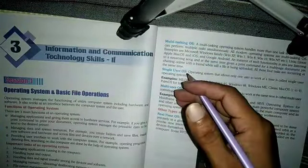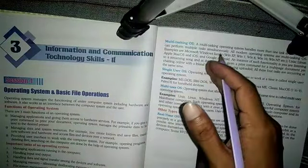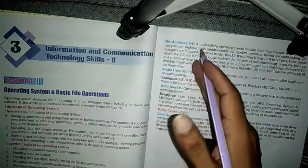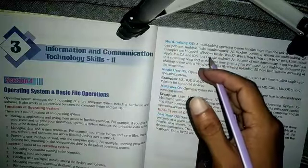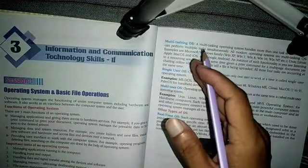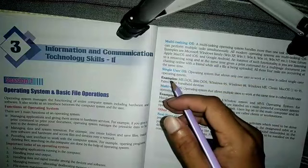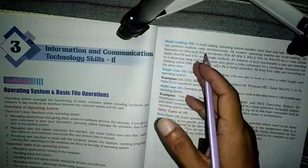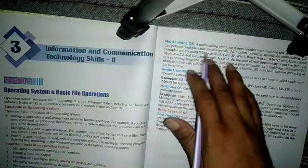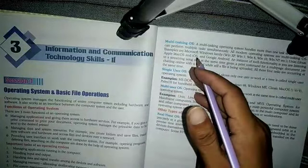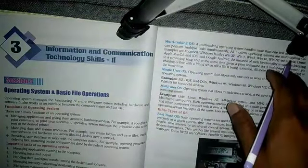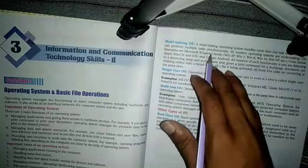In a multitasking operating system, we can open multiple tasks — for example, work on MS Word while playing music in the background, or browse the internet at the same time. Users can perform multiple tasks simultaneously. All modern operating systems are multitasking operating systems.